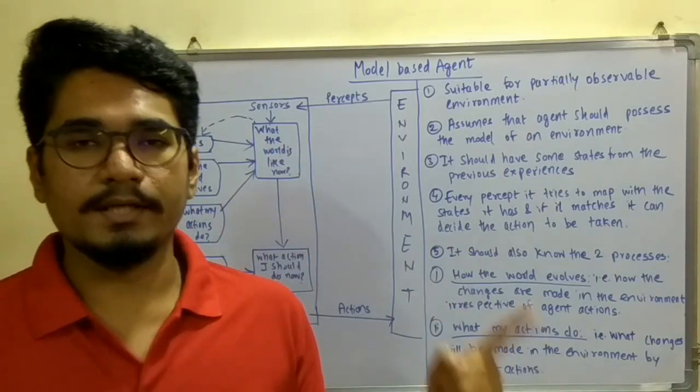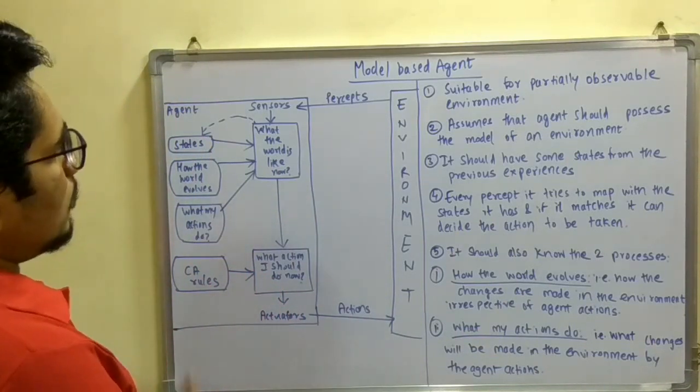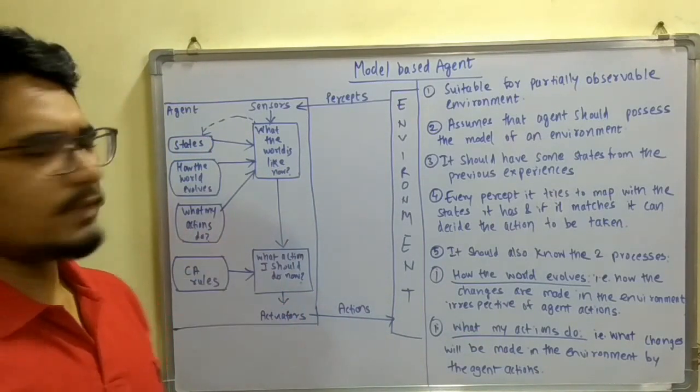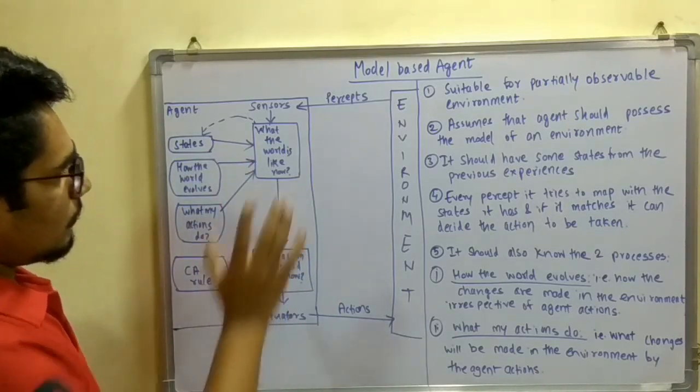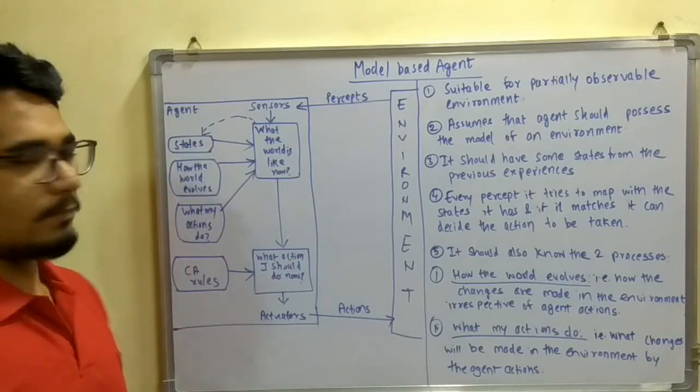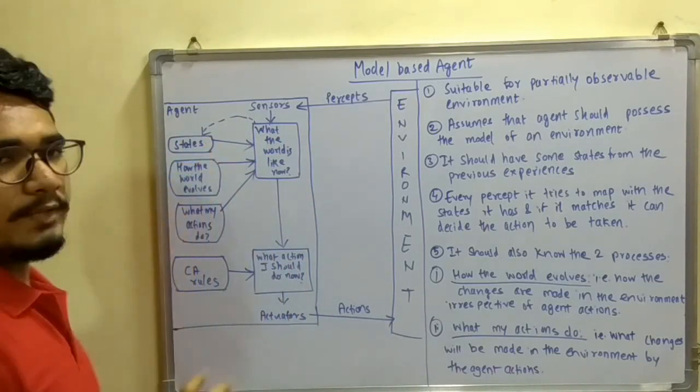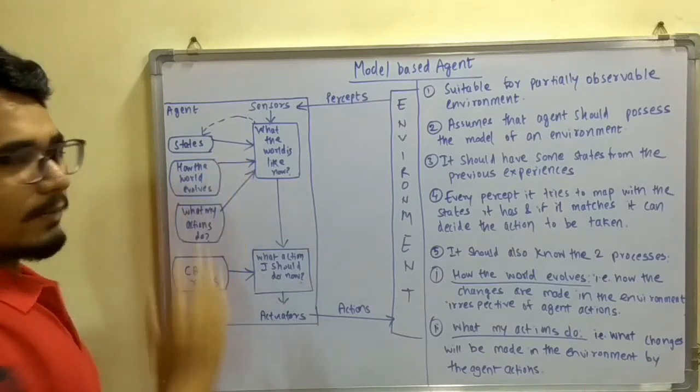So let's start. First of all, we have this diagram similar to the one for simple reflex agent. In that, only this part was the same, but not this part. In model based agent, we have introduced three different background information components, especially for accompanying the further actions or for advanced operations.